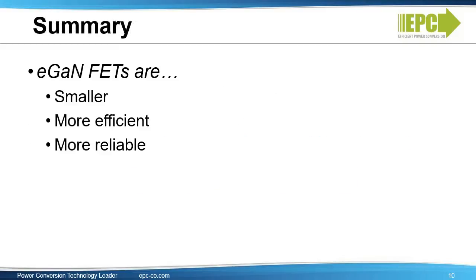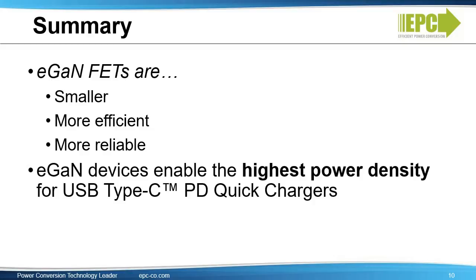In summary, eGaN FETs are smaller, more efficient, and more reliable than silicon MOSFETs. Using eGaN devices enables the highest power density for USB Type-C PD quick chargers.